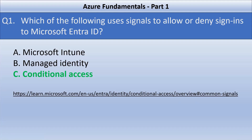Conditional Access takes signals from various sources into account when making access decisions. These signals include user or group membership, IP location information, device, application, and real-time and calculated risk detection.